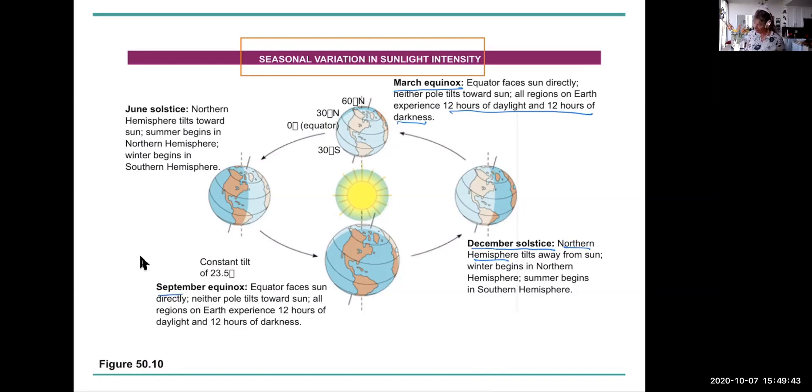In September, it's the equinox. Again, neither pole tilts towards the sun, so there's 12 hours of daylight, 12 hours of darkness. And then the June solstice, well, the northern hemisphere tilts toward the sun, summer begins, which we're always all very happy about, and the days get longer, which is terrific.